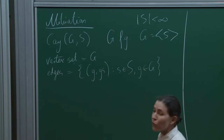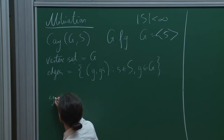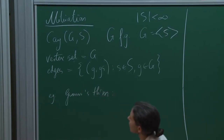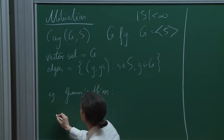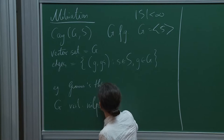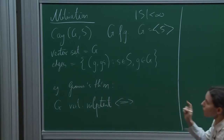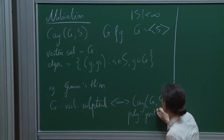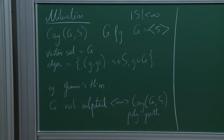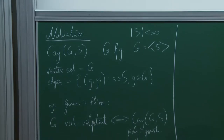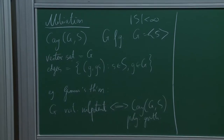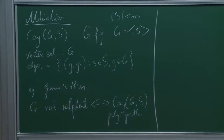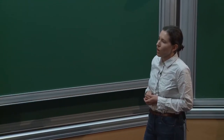Most famously, Gromov's polynomial growth theorem says that a group is virtually nilpotent if and only if the Cayley graph has polynomial growth — that is, if we fix some element and look at balls about it, the number of elements in such a ball grows polynomially with the radius. Also, if we change the generating set S, we get a very similar object — something that is quasi-isometric, essentially the same as the Cayley graph with the other generating set, up to finite perturbations of the metric.